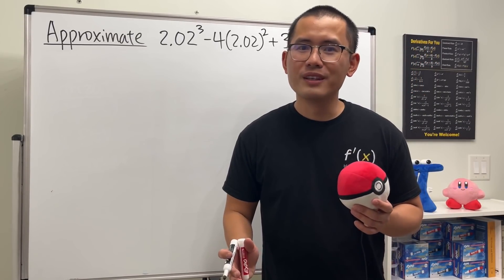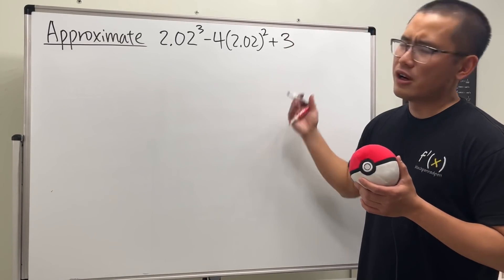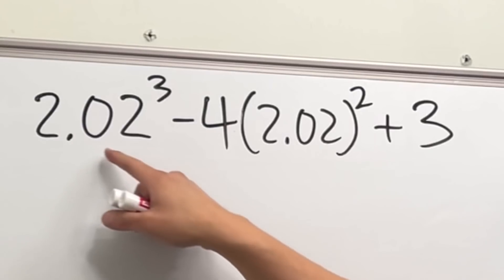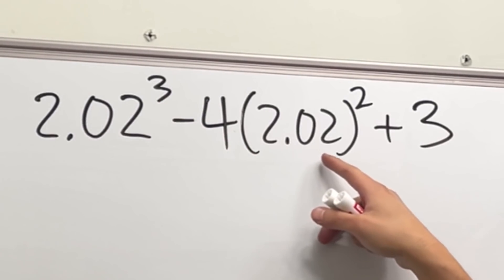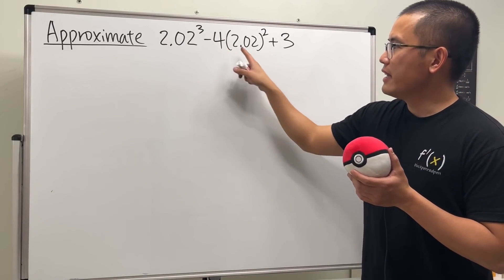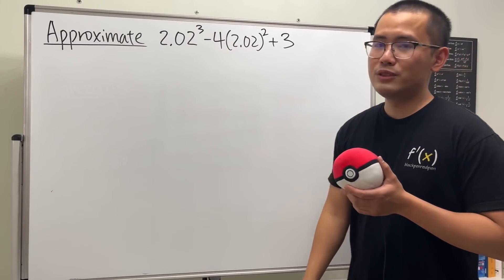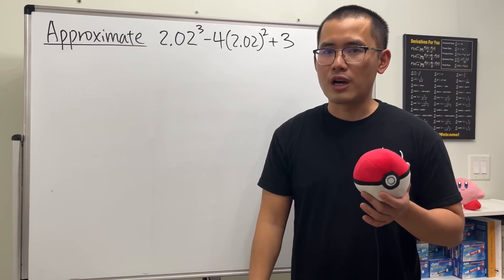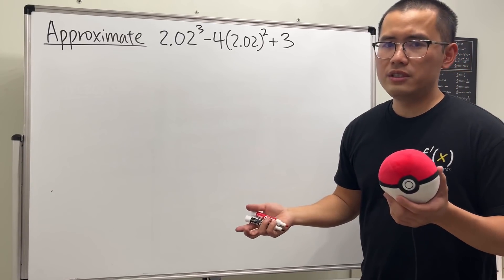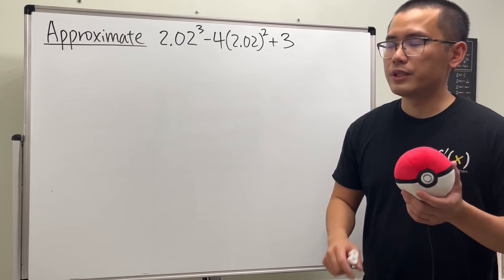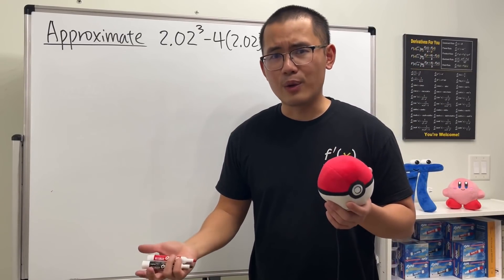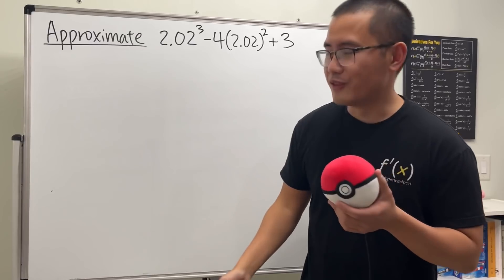I'll show you how we can use calculus — not calculators — to approximate this expression: 2.02 to the third power minus 4 times 2.02 squared plus 3. The number 2.02 is what causes trouble; if it were just 2, it would be easy. So let's replace them with x and define a function, because with calculus we'll need to take a derivative.